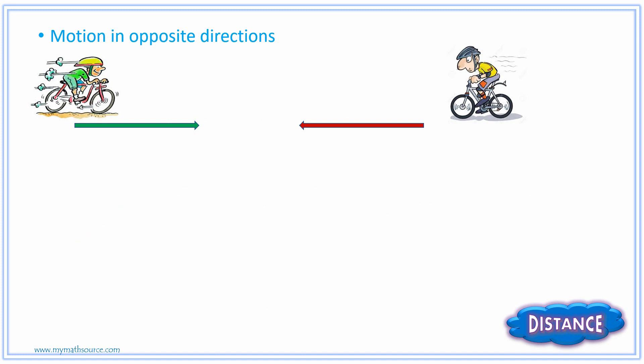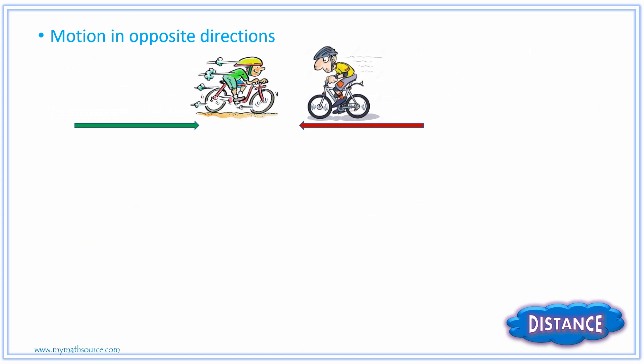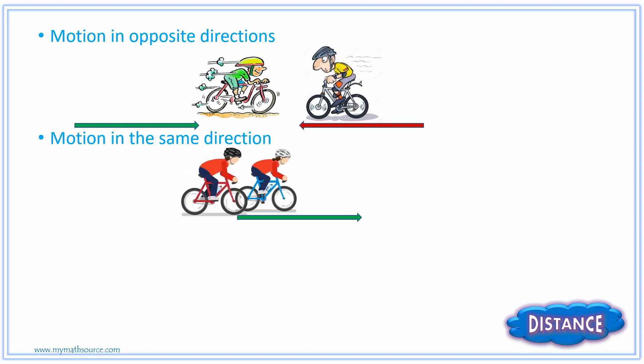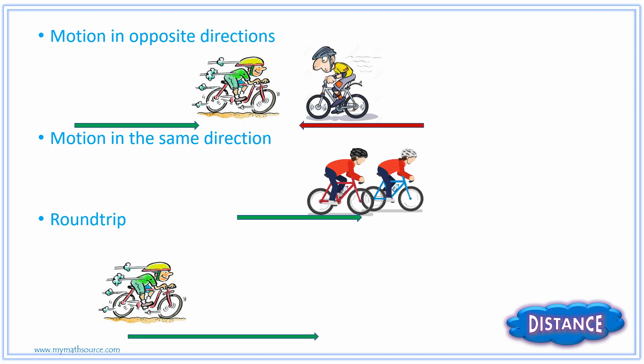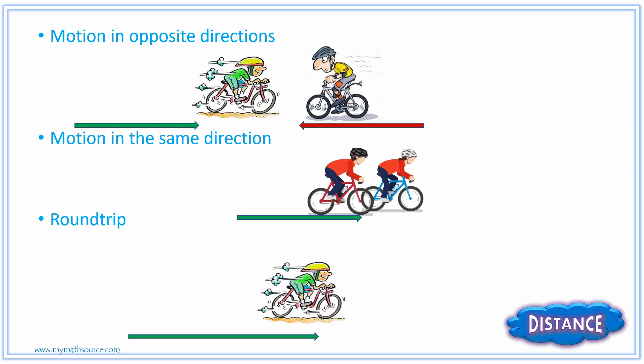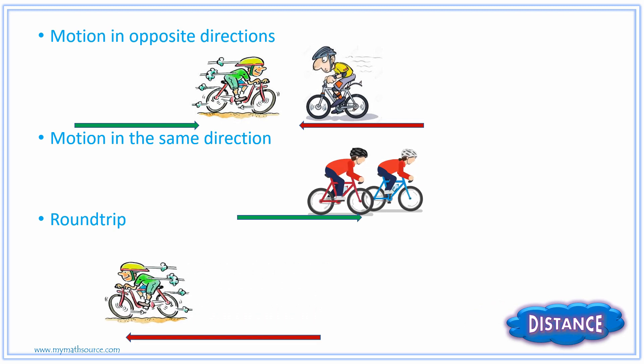The three main types of motion that we have is motion in opposite directions, as seen in this animation. Also, motion in the same direction. And last of all, round trip, where you may see in this cyclist rides a certain direction and then turns around to complete his round trip, coming right back home, covering the same distance.